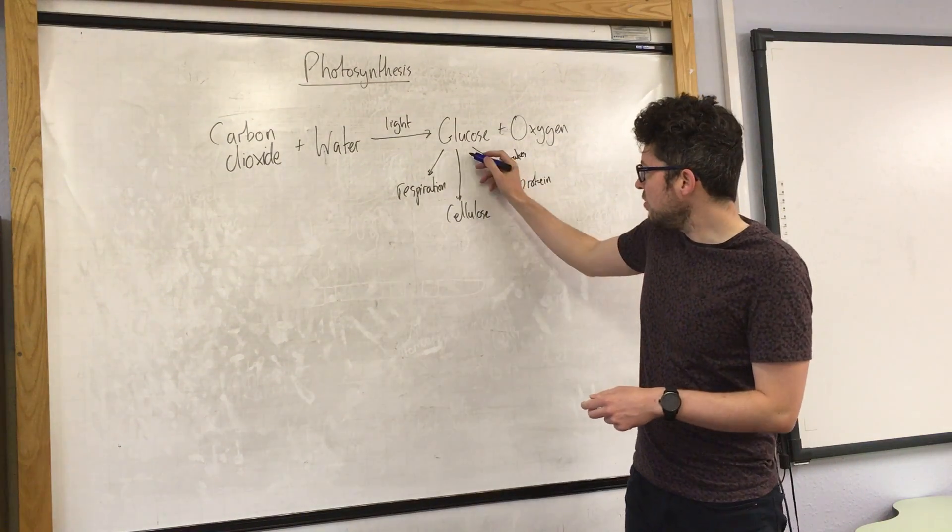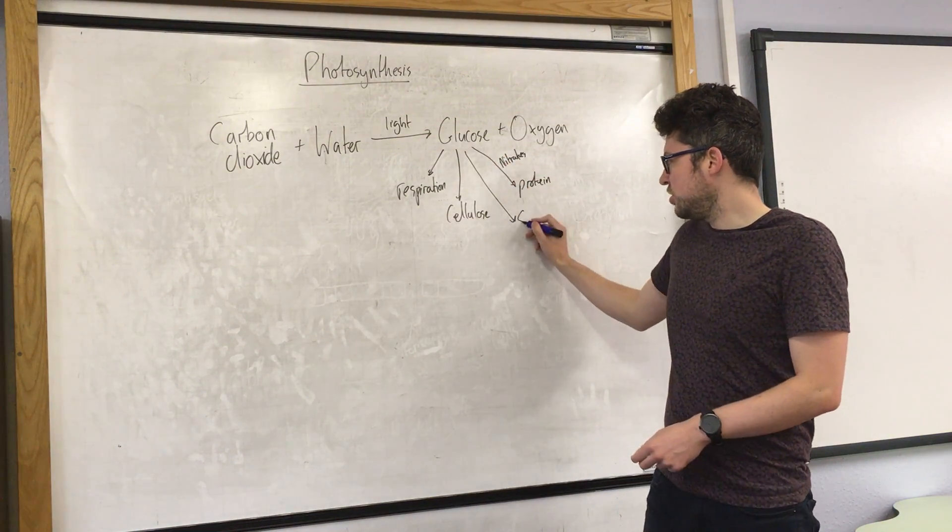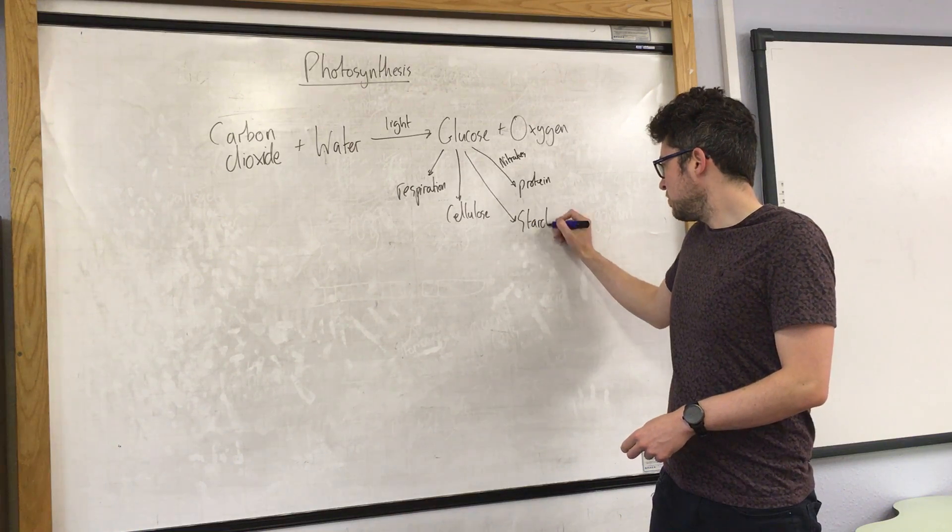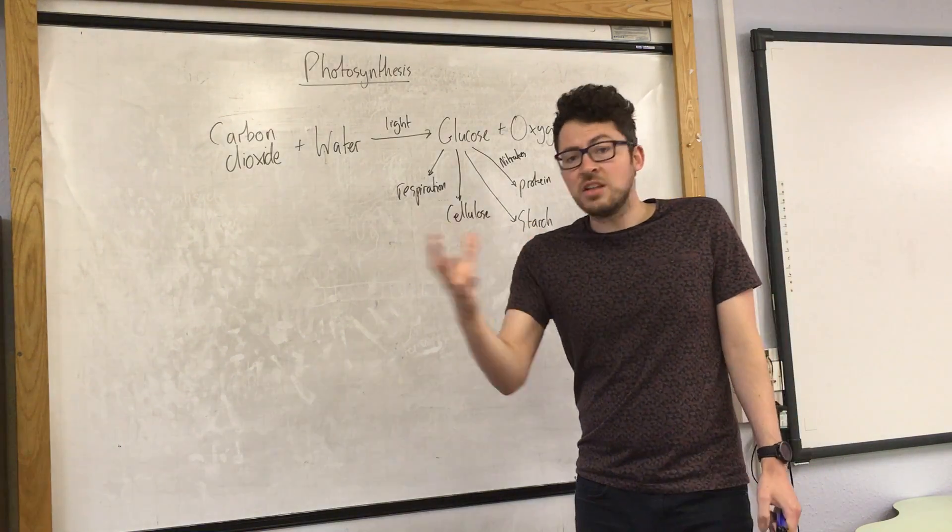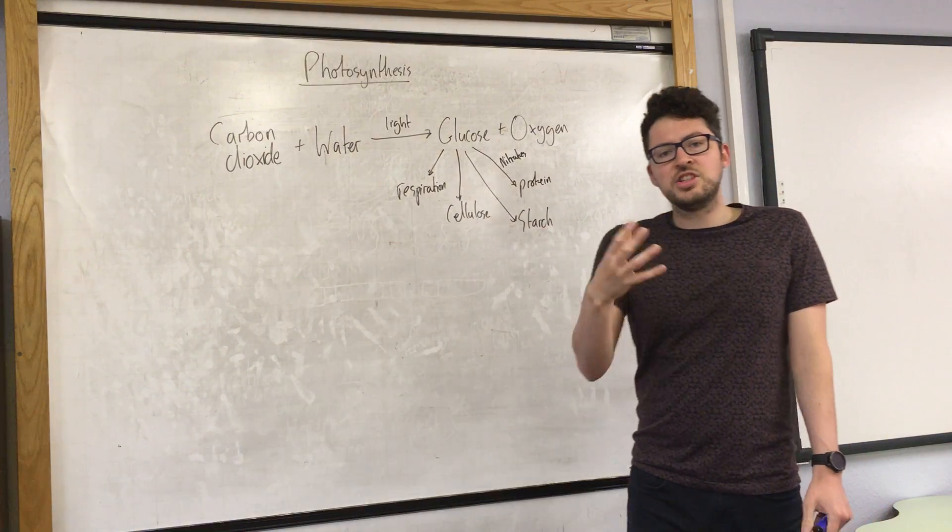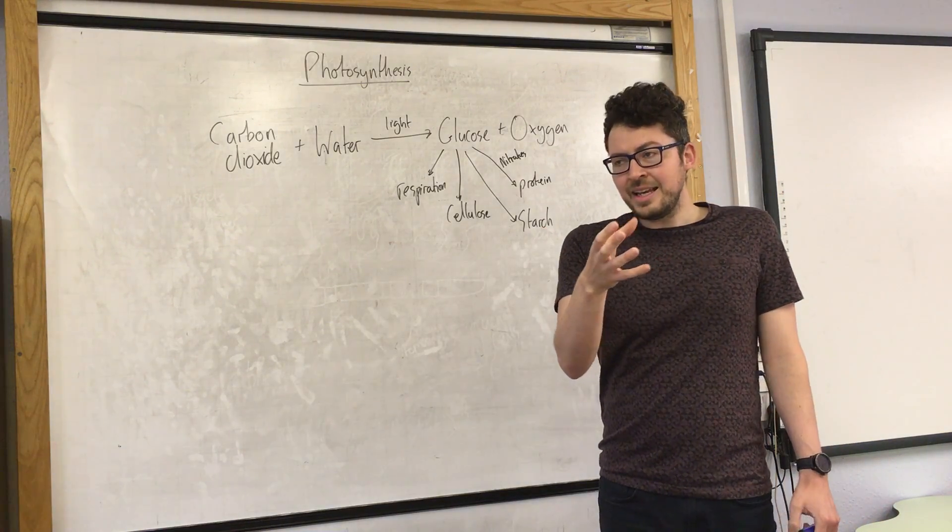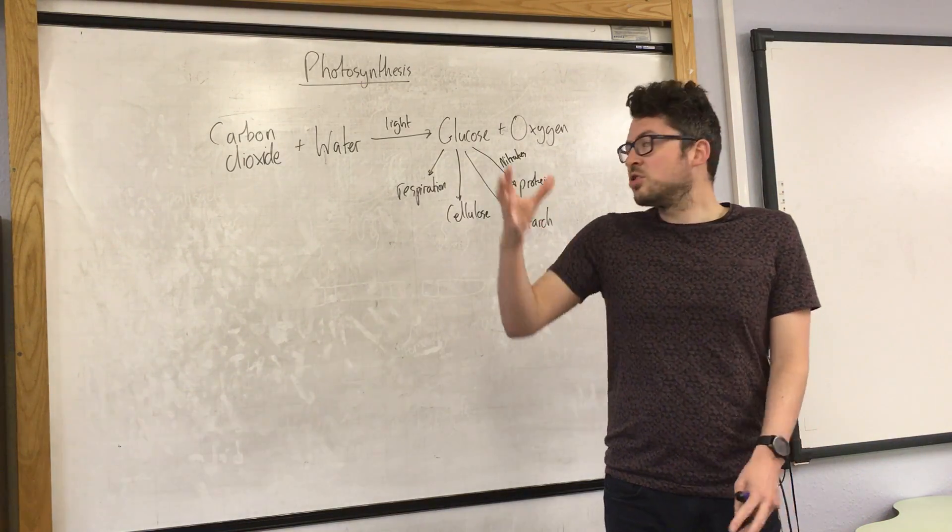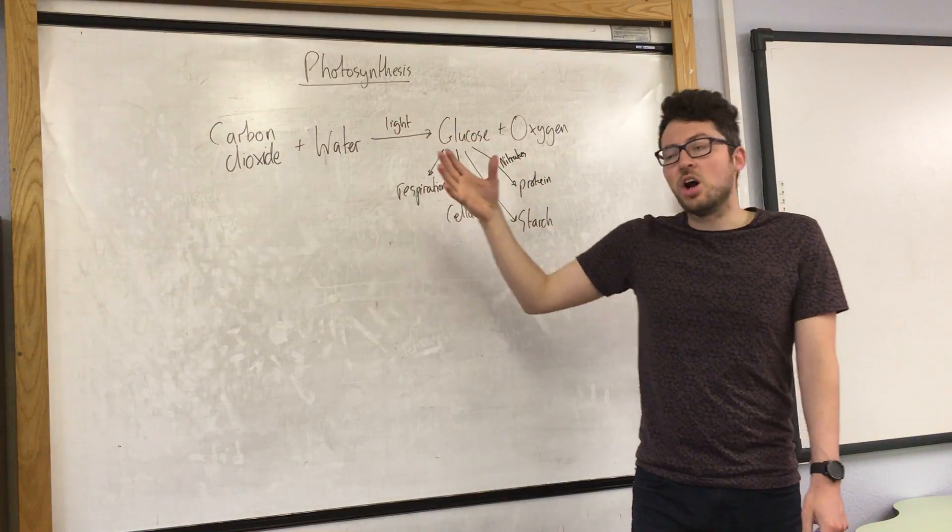The plant can also use glucose to make starch. It's important that the plant makes starch because starch acts as an energy storage molecule, particularly during the winter when there's not much light and the plant can't make much glucose.